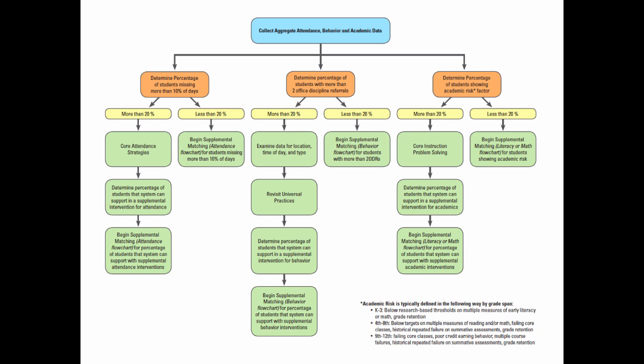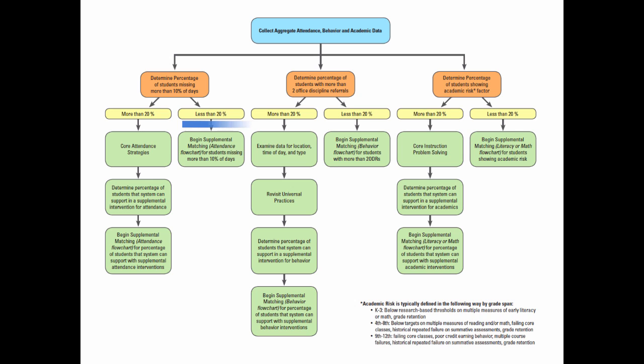Your NC MTSS team has created a flowchart to assist district and school MTSS teams to make sense of attendance, behavior, and academic data in a comprehensive universal screening system. We will visit each area and work our way down the flowchart. In step four, we will introduce a tool that will assist districts and schools to analyze this data simultaneously, or work our way across these steps.